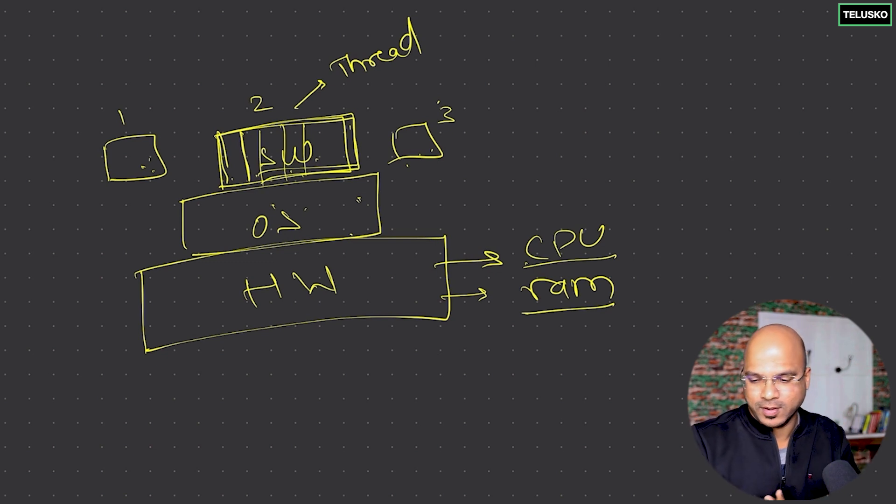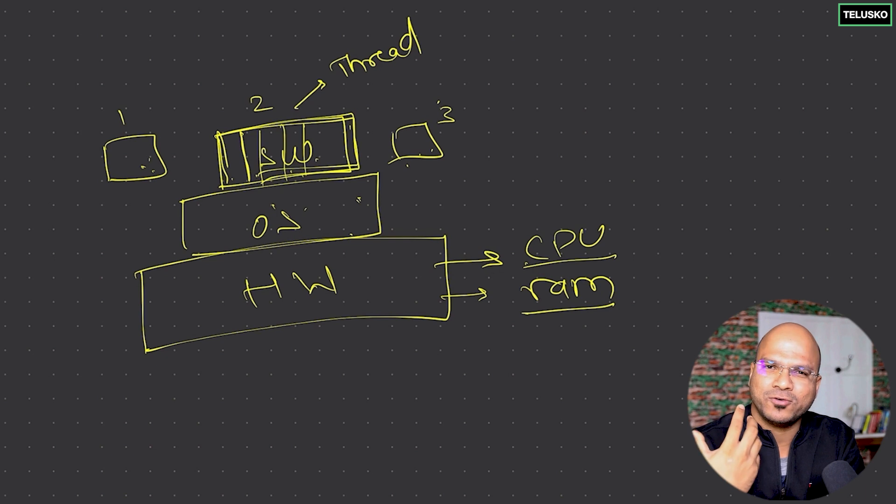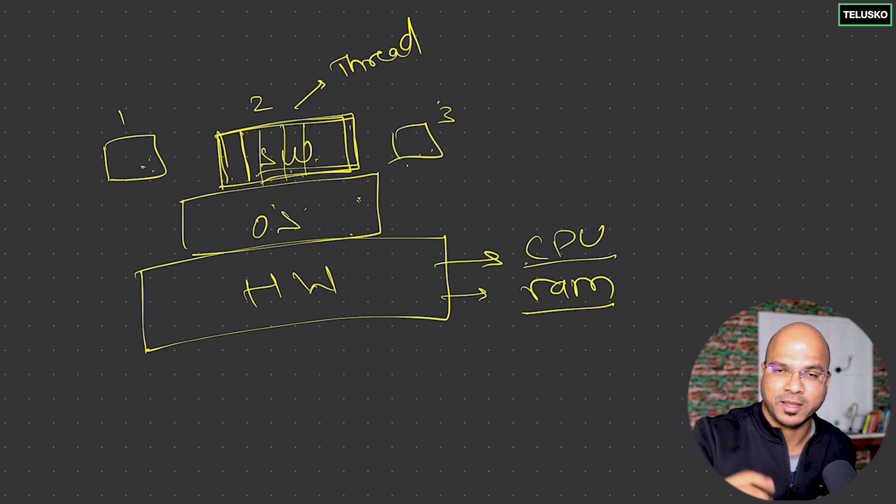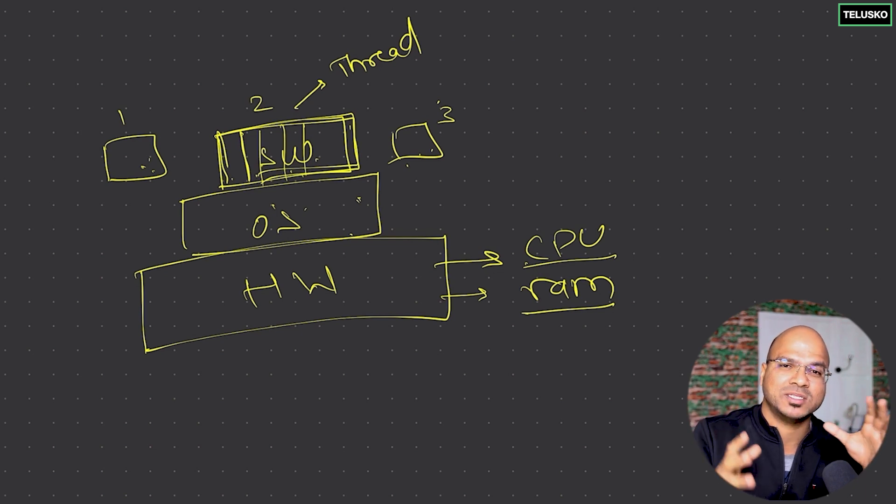When you play a game—any game which you play, maybe Mario or cricket or football, I'm talking about video games—if we talk about football, we have multiple players running at the same time, the ball is moving at the same time, the audience is cheering at the same time. So you have multiple things happening at the same time.